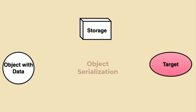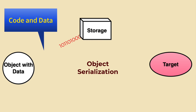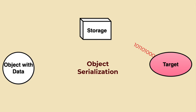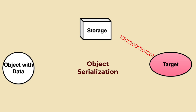A serialized object is an object that has been converted into a format that can be easily stored or transmitted and later reconstructed. Serialization is the process of converting an object's state, including data, into a byte stream, which can then be saved to a file, sent over a network, or stored in a database. The byte stream represents the object's state, which can later be deserialized to create a new copy of the object.